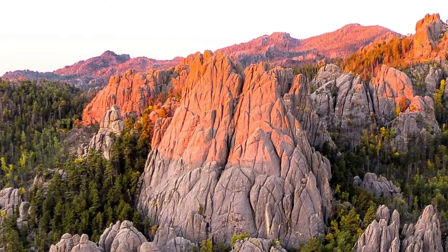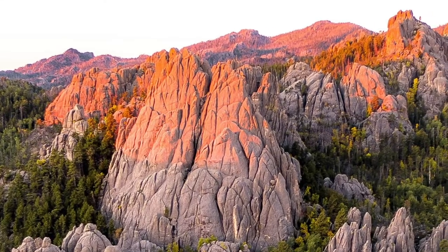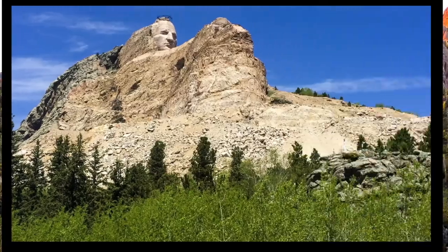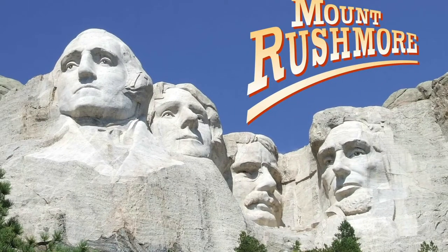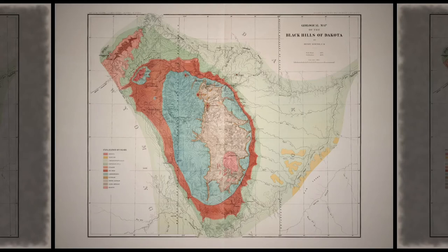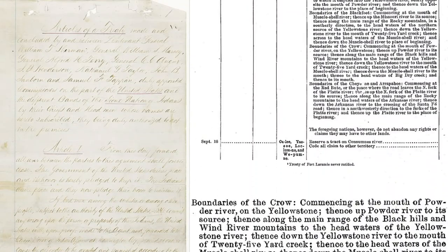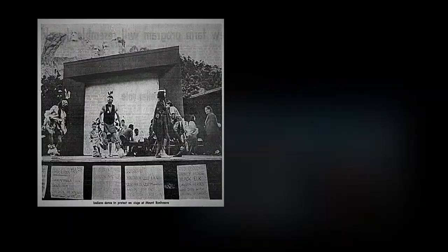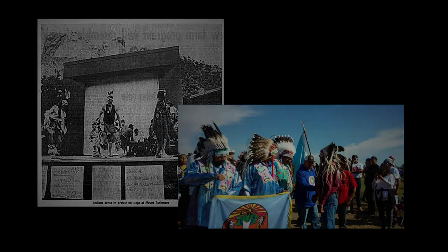These are the Black Hills, land sacred to the Sioux Native Americans and home to Mount Rushmore. This beautiful but contentious swath of land in western South Dakota has caused the U.S. government to break multiple treaties, which sparked protest movements for over a century that persist through today.